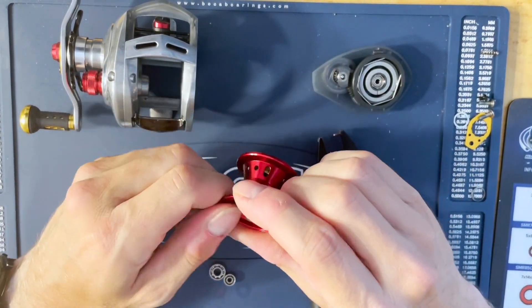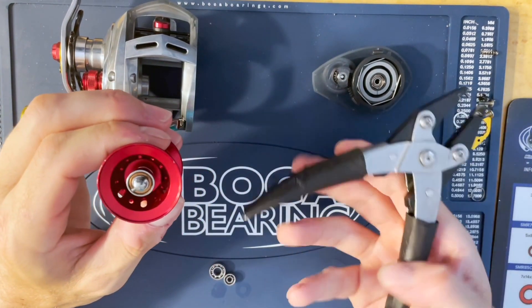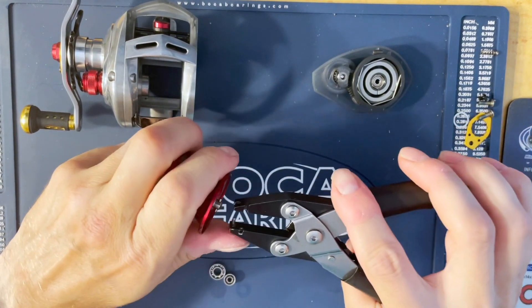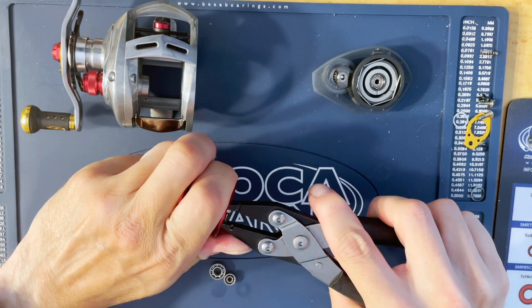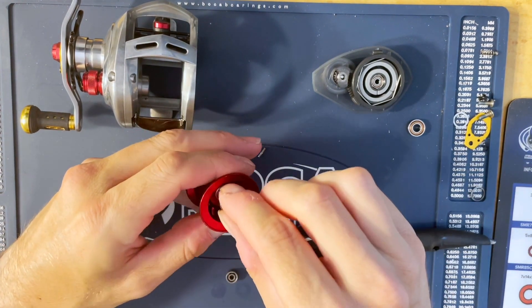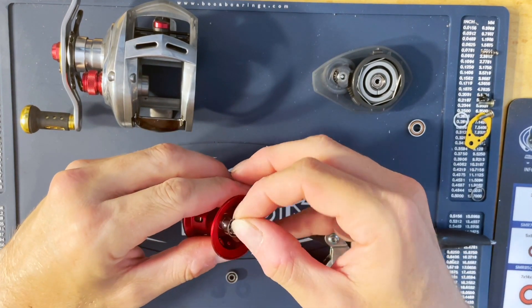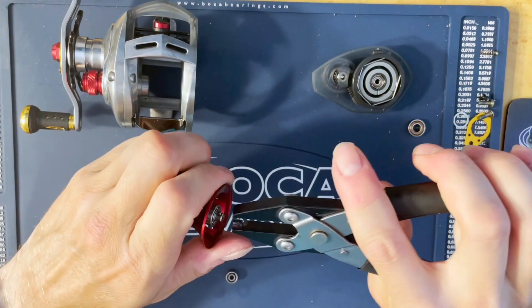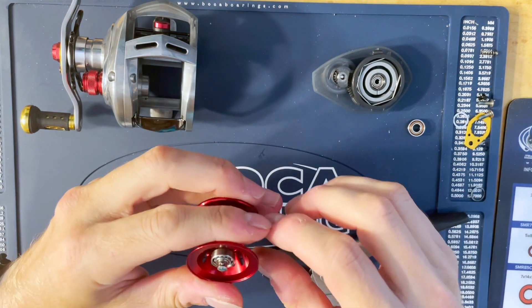You're going to need the spool pin pliers here. Same size bearings as TDZs. You're just going to barely push out with the pin, just barely squeeze, pop that bearing off, pop the new bearing on. I'm going to add some oil and stuff after they're installed. There's that one.